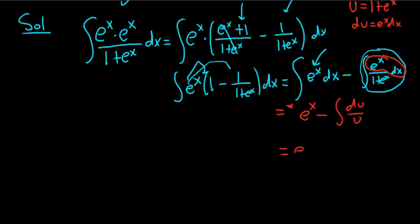So this is equal to e to the x. Whenever you have du over u, you always get ln absolute value of u. Then we have our plus c.